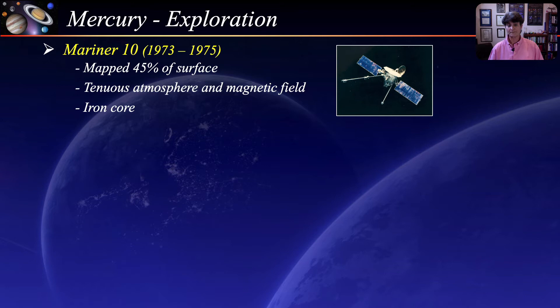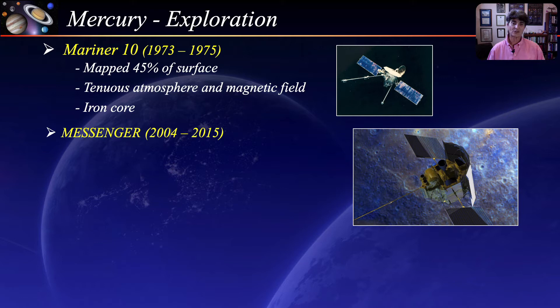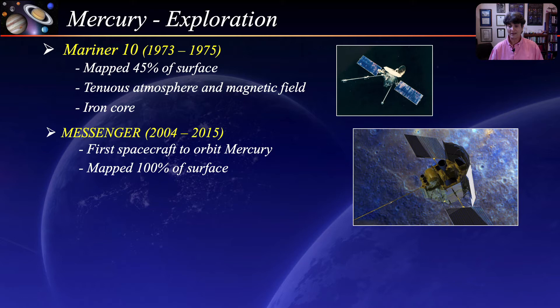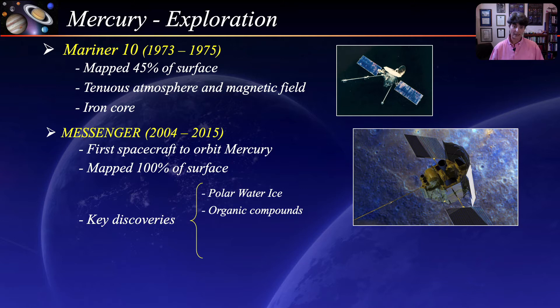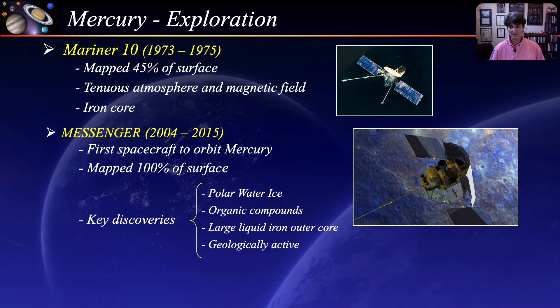The next spacecraft to visit Mercury was Messenger, launched in 2004. In 2011, it became the first spacecraft to orbit Mercury and completed 100% mapping of the planet's surface. Among its key discoveries were water ice and organic compounds at the planet's north pole, and evidence of a large liquid iron outer core. Data from the last months of the Messenger mission suggests that Mercury is still contracting — making it the only planet besides Earth that is tectonically active.